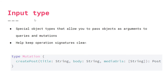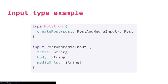So what about input types? An input type is a special object type that allows you to pass objects as arguments. Instead of passing in multiple scalar type arguments — like string, string, a list of string — you can just pass in one object that represents all those scalar types. This keeps operation signatures clean. For example, you would define type mutation with a name like create post, and instead of having three arguments you only have one argument whose type is an input type you defined, with fields that are exactly the same as before.